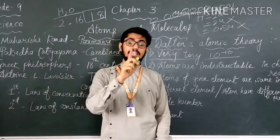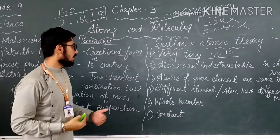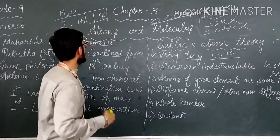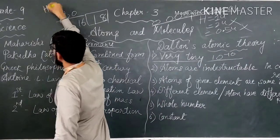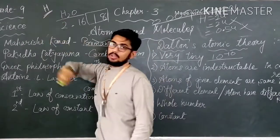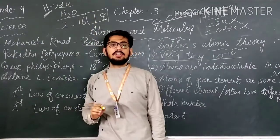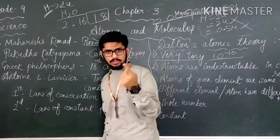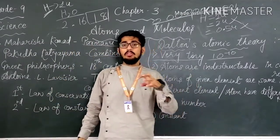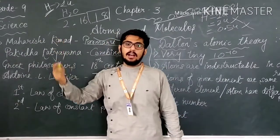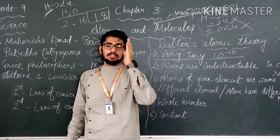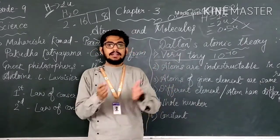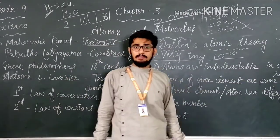Now, atoms of a given element are same in mass as well as in chemical properties. Given an element, we have to fix a particular element. Suppose we are talking about hydrogen, which is easiest because it is the first element in our periodic table. If we are talking about hydrogen, hydrogen is the same everywhere. Hydrogen from Earth or hydrogen gas from electricity, anywhere, any part of the universe, hydrogen from the solar system, they will have the same mass and chemical properties.